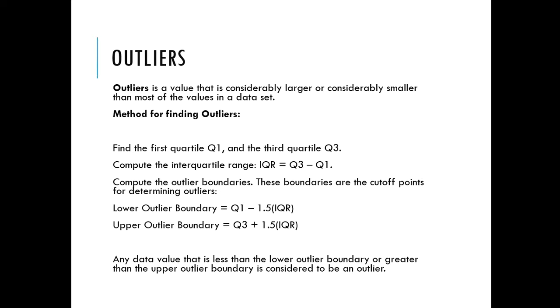It's something that doesn't really mimic the rest of the data. So the method for finding outliers is you find the first quartile and the third quartile, which you get from the calculator. Then you compute the interquartile range, Q3 minus Q1.